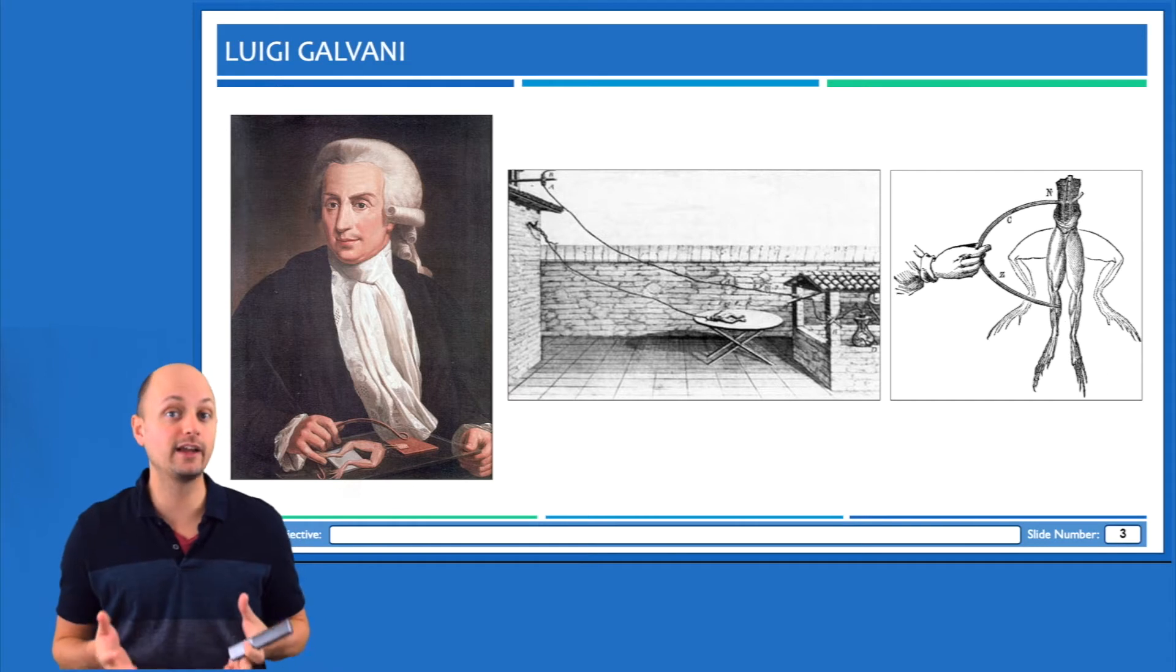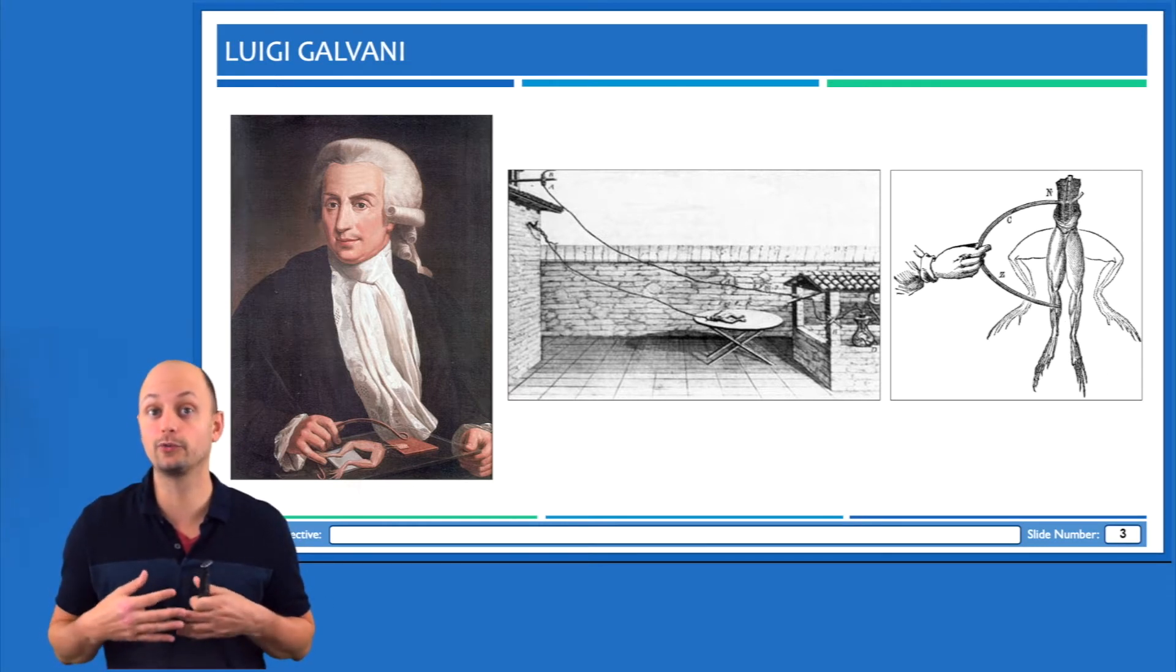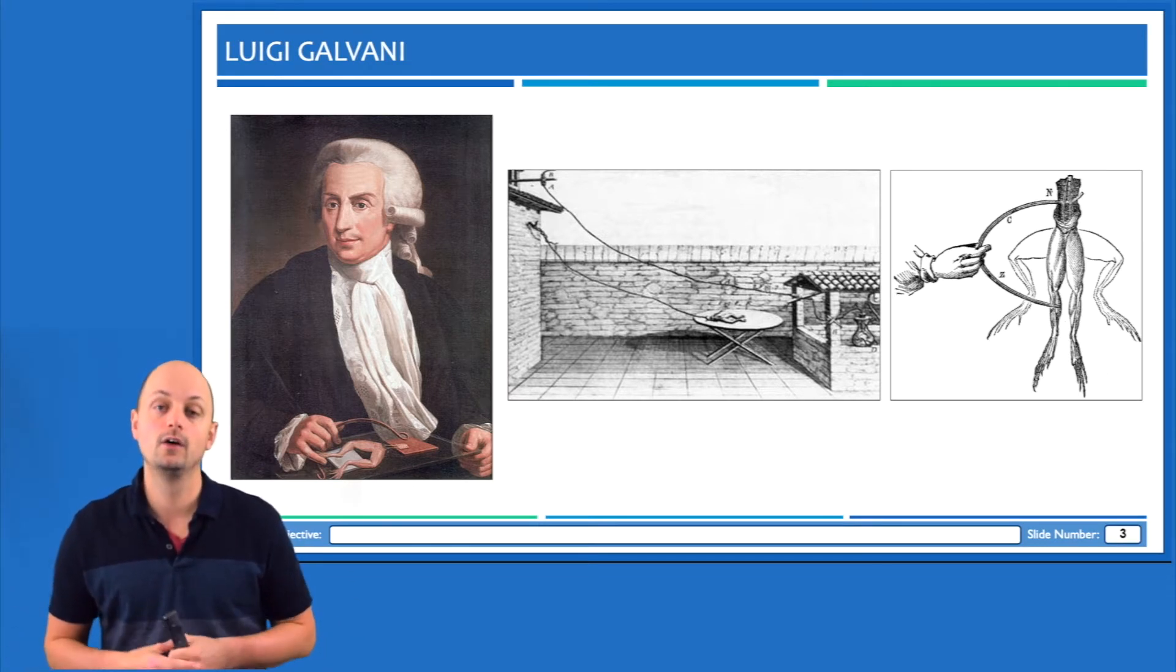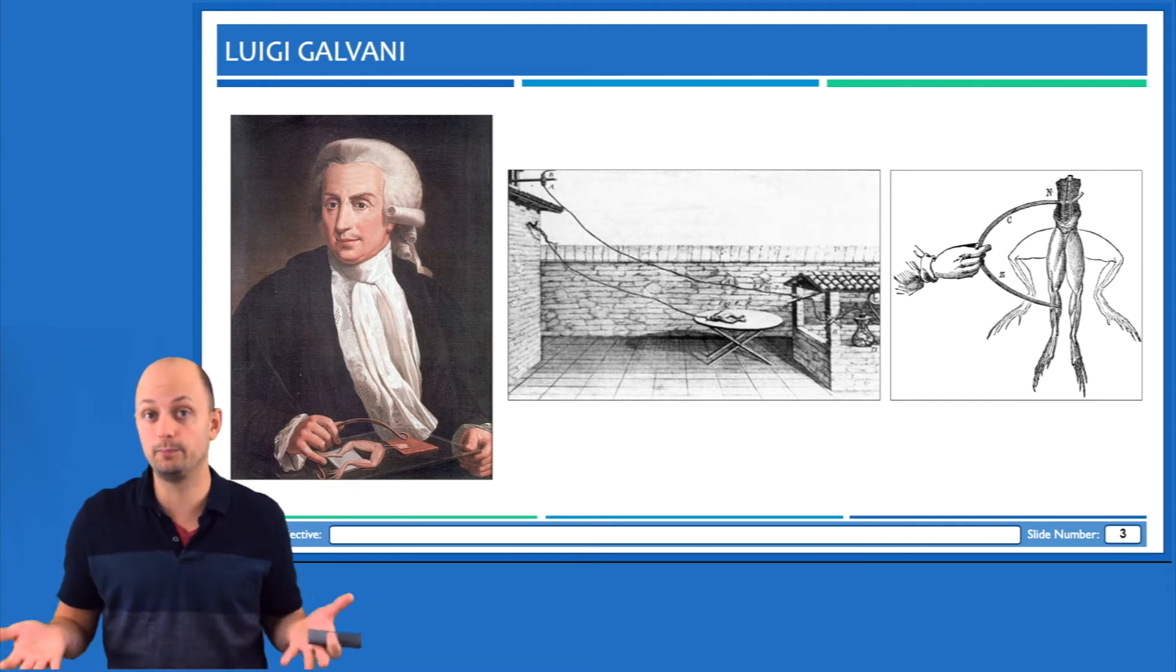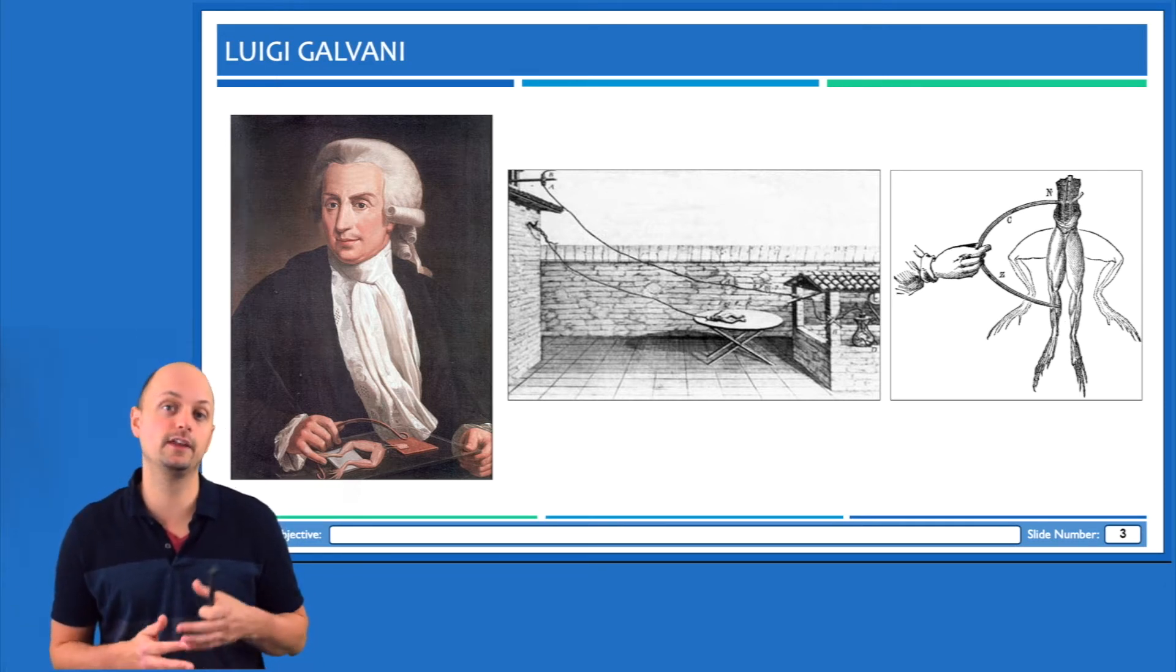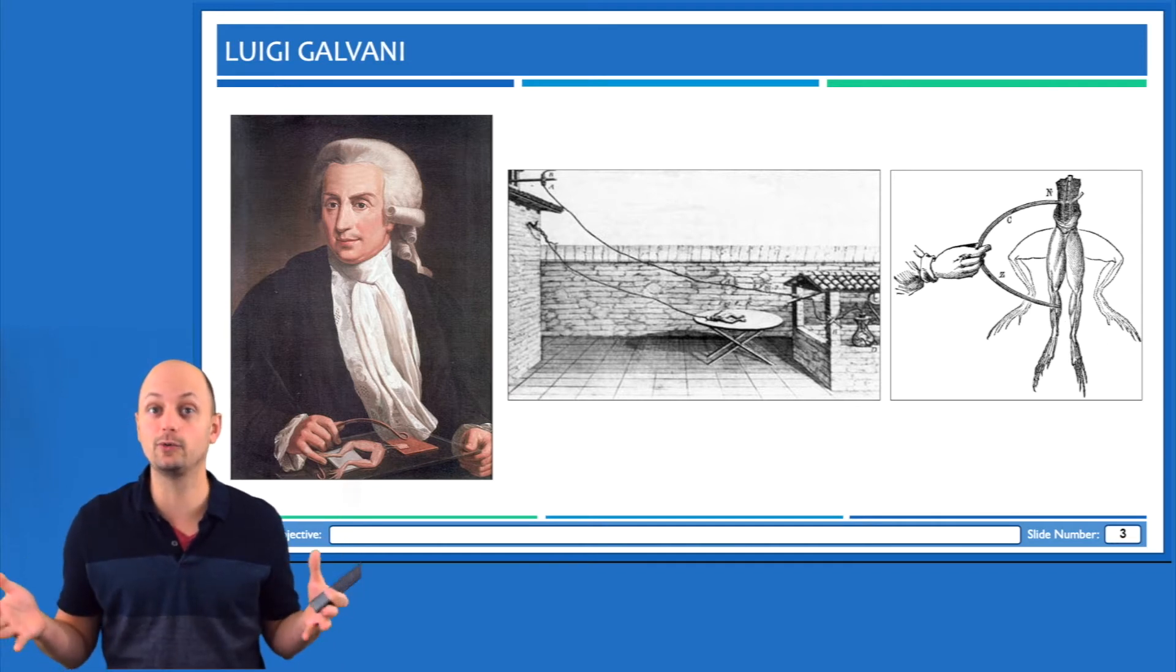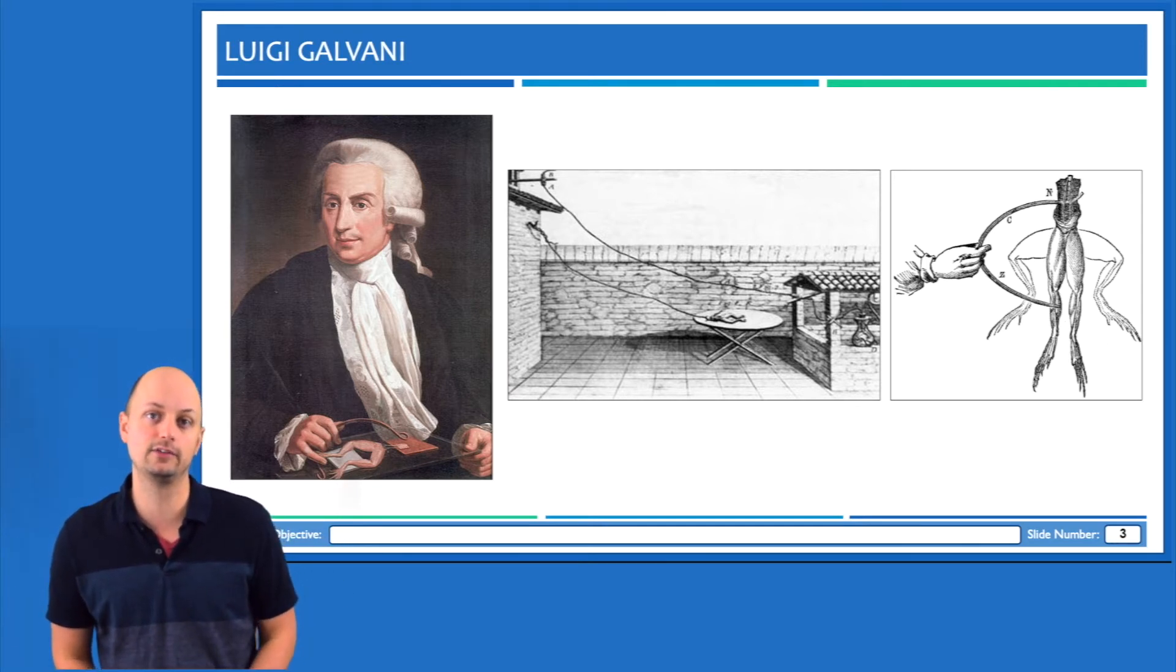But there was this raging debate about the mechanism by which the nervous system and muscles functioned. And some of the prevailing theories at the time were that it occurred through divine intervention. Other people believe that some kind of electrical current traveled through the air and was picked up by the nervous system and by muscles. And some people even thought that nerves and muscles could inflate or deflate in order to send signals.